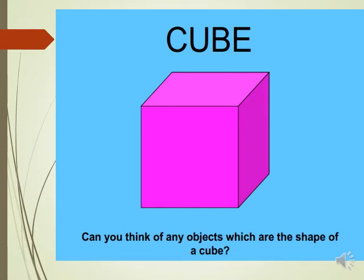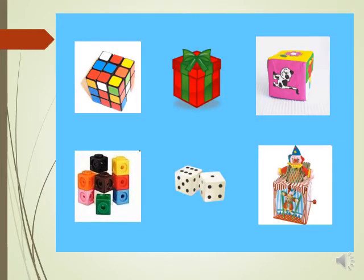Now let's see some real-life examples using 3D shapes. Can you think of any objects that are the shape of a cube? Some examples include a clown toy, dice, gift boxes, and books — so many toys you can find that are the shape of a cube. All solid objects are 3D shapes.